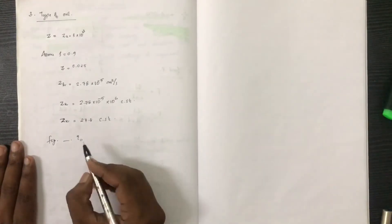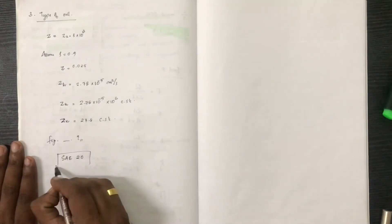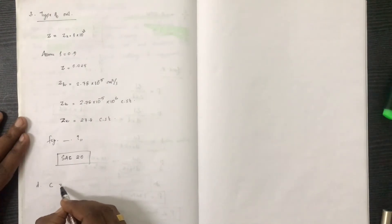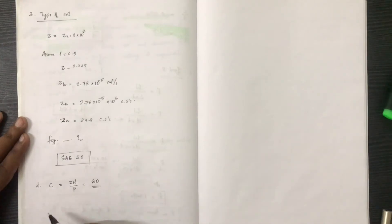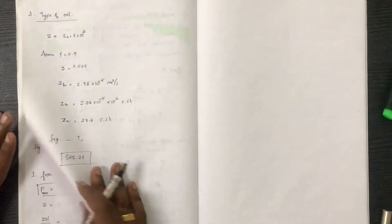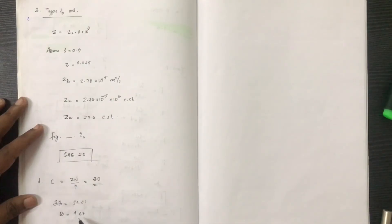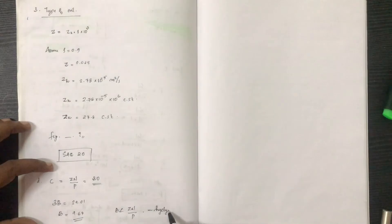The value of B is equal to T. ZN by P for the operating condition gives ZN/P equal to 29.0. Since B is 9.67 and ZN/P is greater, this confirms hydrodynamic lubrication condition.